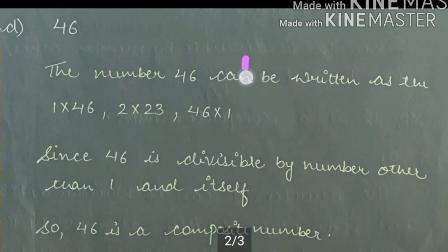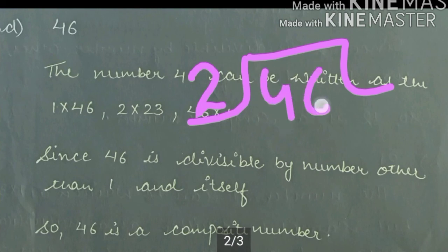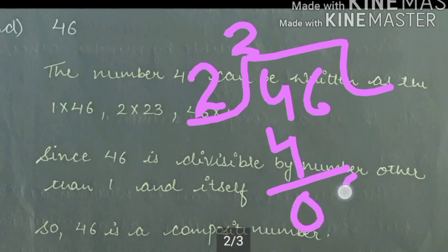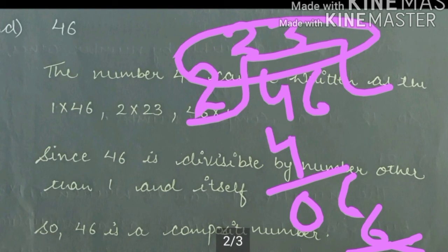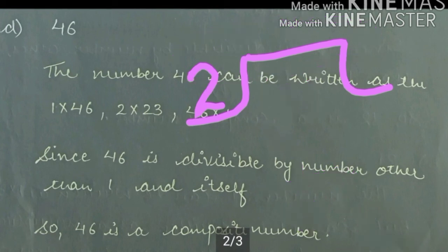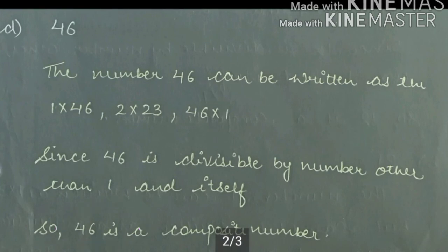Is that clear? Let's check if 46 is divisible. Dividing 46 by 2: the answer is 23. So 2 into 23 equals 46. Note down. So 46 is a composite number.